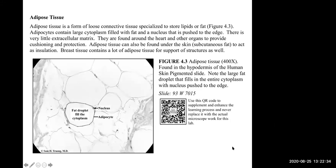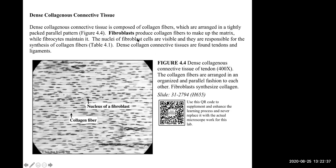Dense collagenous connective tissue — you'll notice right away that the collagen fibers are arranged and stacked very densely on top of each other. This is looking specifically at a tendon, so the collagen fibers are nicely parallel-arranged to provide strength. Your tendons and ligaments connect bones to bones and bones to muscle, so they need to be strong. This tissue lends support and strength as it connects your bones and muscles together.